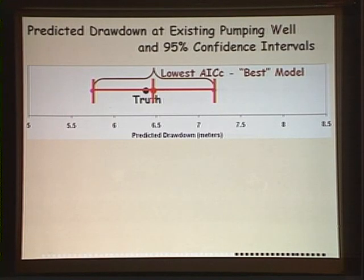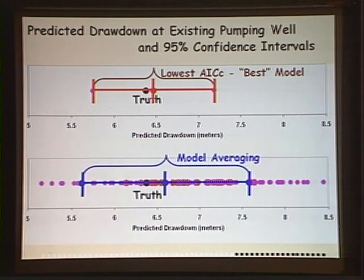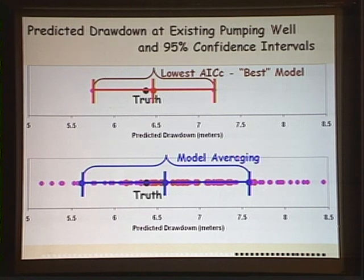Looking at the groundwater model results, for the prediction of drawdown at the well in the south, the best model — the one with the lowest AIC — was pretty close to the truth and included the truth in its confidence intervals. If we multi-model average, the value actually moves slightly away from the truth and the confidence intervals get wider, which will certainly happen at times, but that's not the only thing we wanted to predict.